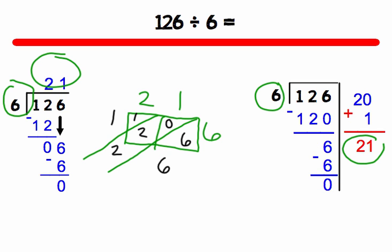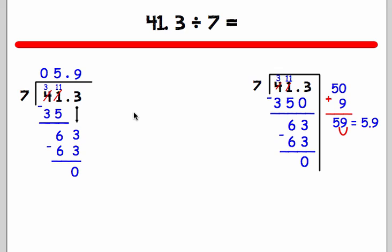Let's try one more. For this problem we're going to check and see if 41.3 divided by 7 equals 5.9. So again we're going to multiply our answer 5.9 times the number outside the box or the divisor.